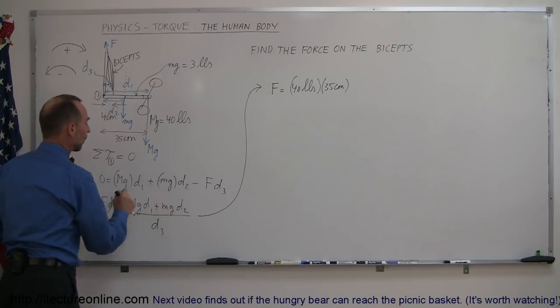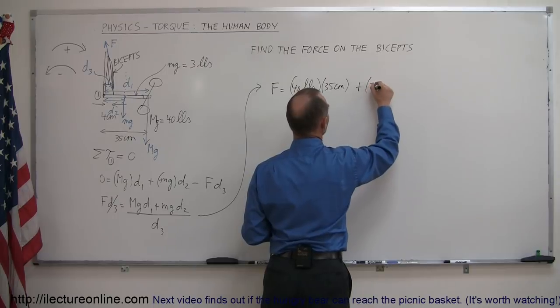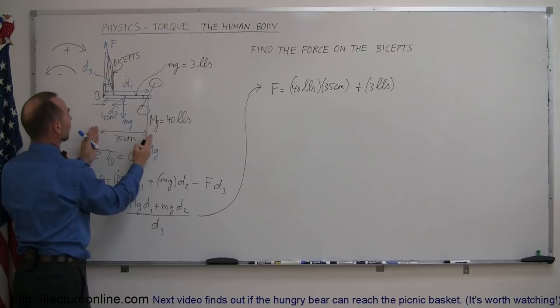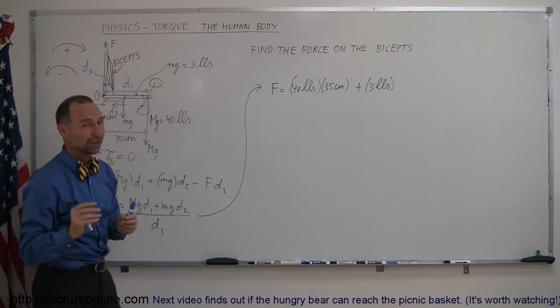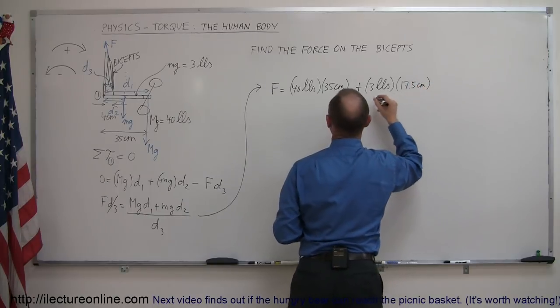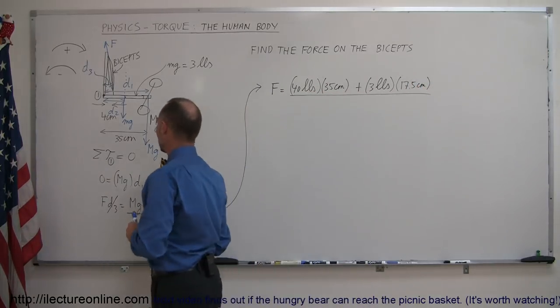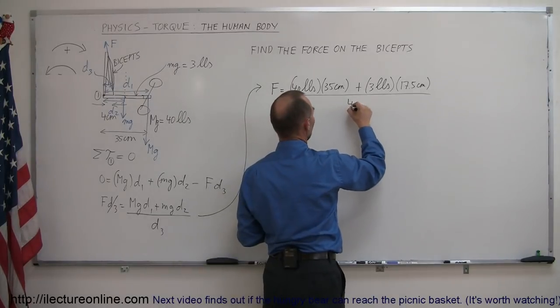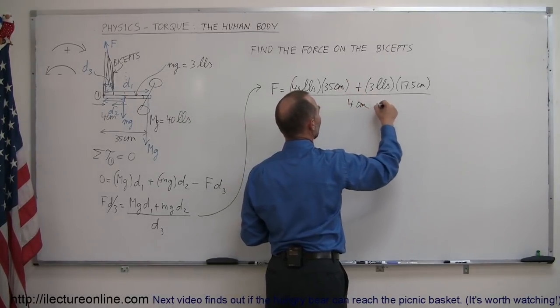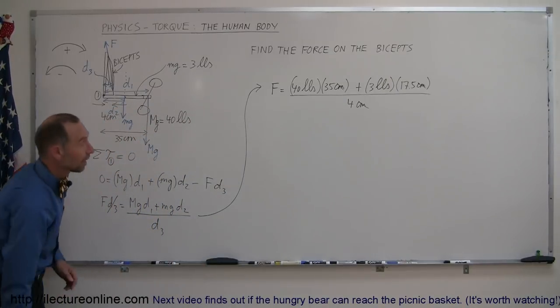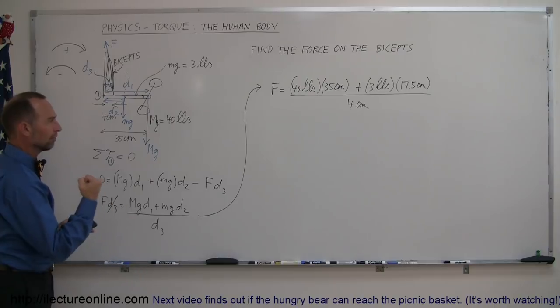Now we have the weight of the forearm which was three pounds and the distance to the pivot point from the center mass that would be half the length of the forearm which is half of 35 centimeters which is 17.5 and the whole thing divided by distance three which is the four centimeters where it's attached to the forearm and to the pivot point. Notice that centimeters here cancel out with centimeters down below.